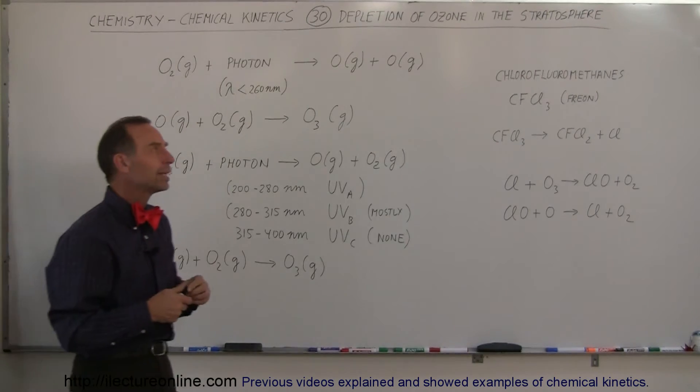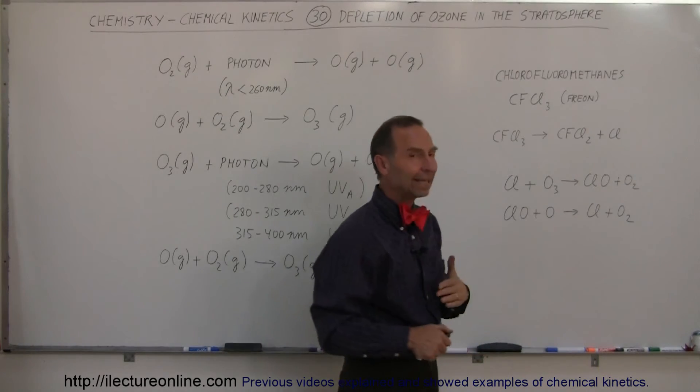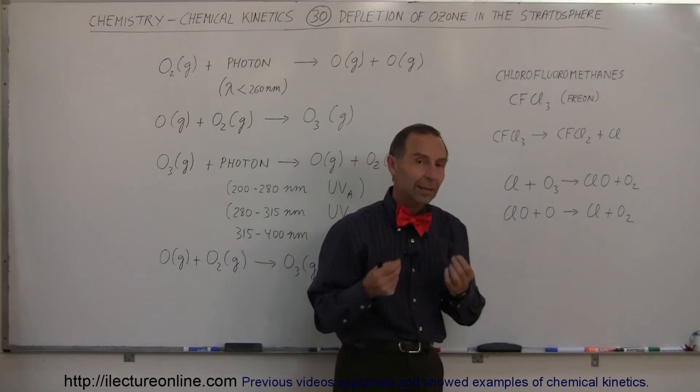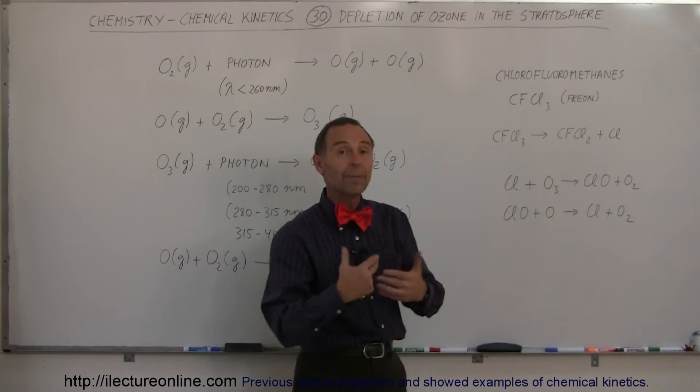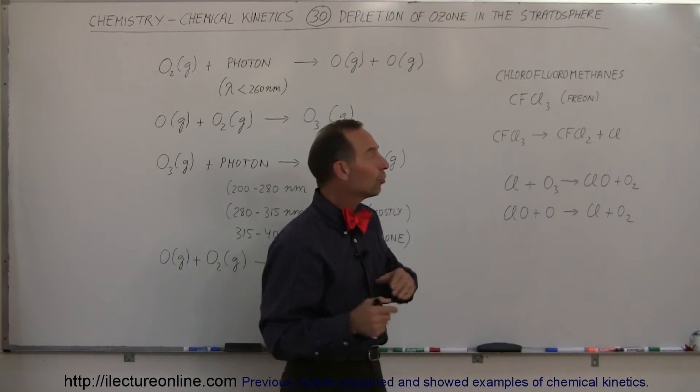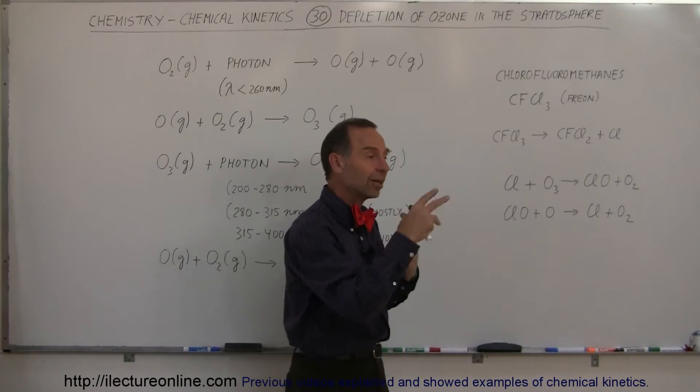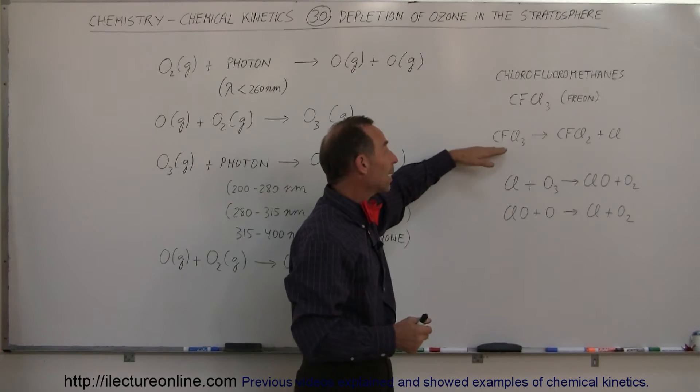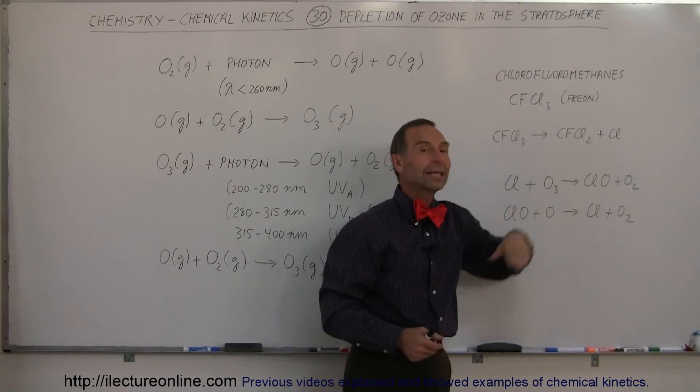So how does chlorine get involved? Well, we have a lot of chemicals called chlorofluoromethanes. Freon is a good example of that. Freon is the chemical we used to use in our air conditioners and refrigerators to make them work. We now no longer use those because what happens when this gas leaks out of the refrigerator, leaks out of the air conditioner, it's bound to do that, then it gets into the atmosphere and in the atmosphere it will shed off one of the chlorine atoms.